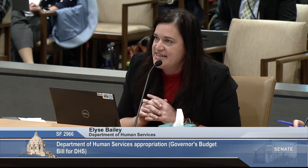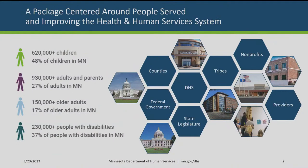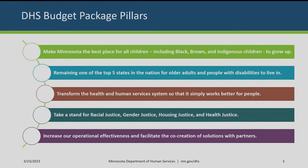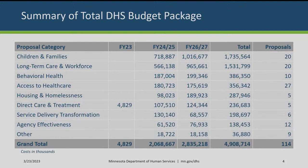Ms. Bailey reminds the committee of the founding principles of the governor's budget: a package centered on the people served in DHS programs, and fundamentally improving the system for all partners. The total package is $4.9 billion over the budget horizon, about $300 million more than the initial budget. For this committee's jurisdiction specifically, it is approximately $2.9 billion over the horizon with 74 distinct proposals.